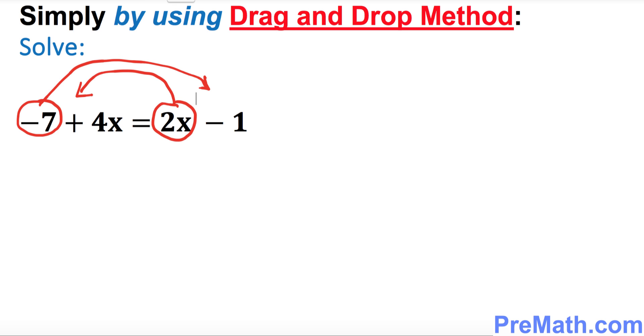So whatever I have circled is gonna get moved. So this is what happens now. Positive 4 stays there and when you move this positive 2x, it becomes -2x. You change the sign. On the right-hand side we already have -1. When you move this -7 on the other side, it becomes positive 7. So 4x take away 2x is 2x equal to 6. Divide both sides by 2, so x turns out to be 3.